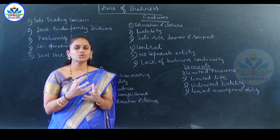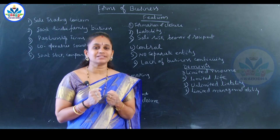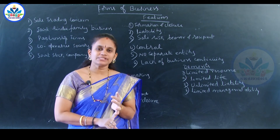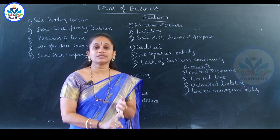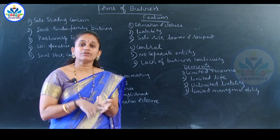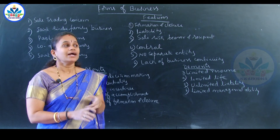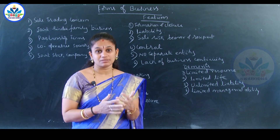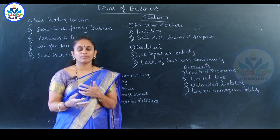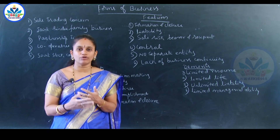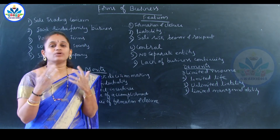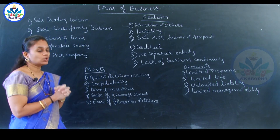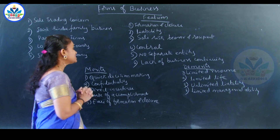The next feature is control. Control of the business is 100% in the hands of the sole trader. He decides what type of business to conduct, where to conduct it, what stock to hold, the interiors of the shop to attract customers, the sales promotion methods to use, and the amount of investment. Everything is decided by him. Therefore, 100% control of the business is in his hands.